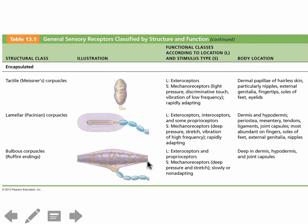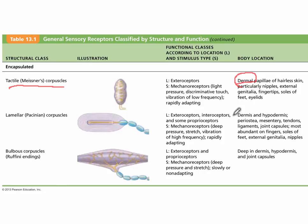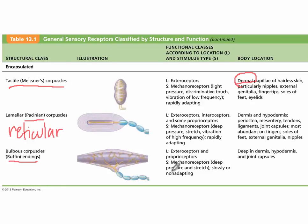The next receptors are tactile or Meissner's corpuscles, located deeper in the skin in the dermis, whereas the Merkel cells are in the epidermis. There are also Pacinian corpuscles, located very deep in the dermis — specifically the reticular layer. Finally, there are bulbous corpuscles, or Ruffini endings, which are also found in joint capsules.